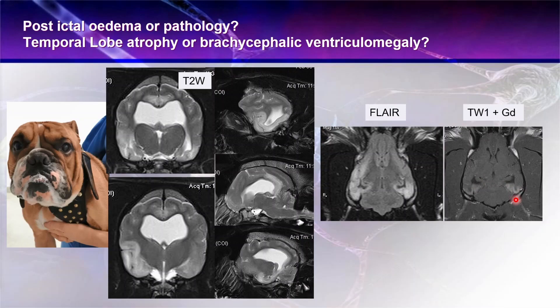So is this temporal lobe atrophy due to him having big ventricles and being a brachycephalic dog, or is there some sort of pathology going on? The answer is probably that there is pathology — this dog likely has limbic encephalitis because there is really quite marked contrast uptake. We wouldn't expect that marked contrast uptake as a postictal effect, although you can sometimes get contrast enhancement there. So it's not an absolute.